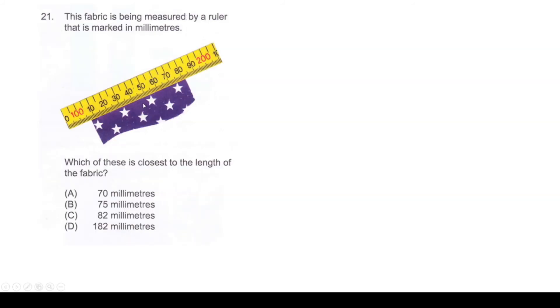This is on measurements. This fabric is being measured by a ruler that is marked in millimeters. Which of these is closest to the length of the fabric? Mark the beginning and the ending measure. Let's consider this 100 to be a 0 mark. The first measurement where the fabric starts is 7 millimeter and the ending is at 82 millimeter. To find the length of the fabric, we subtract 7 from 82, which equals 75 millimeter. Our answer is option B.